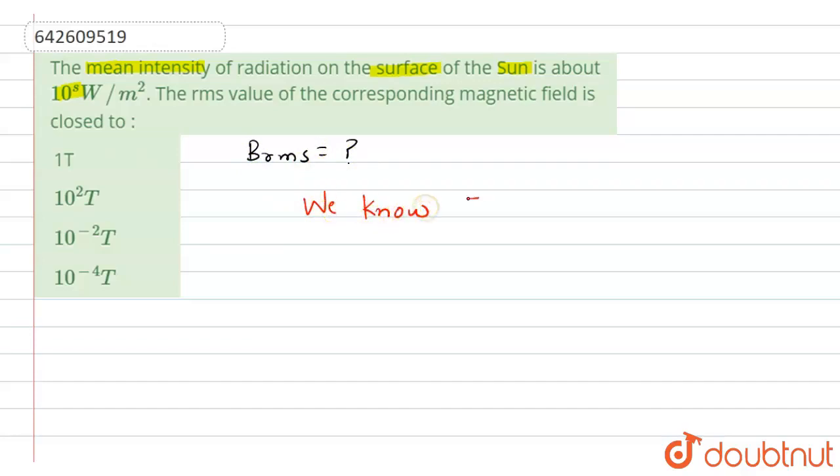We know intensity, that is I equals to epsilon naught C into E RMS square. So now we also know value of E RMS equals to C into B RMS.